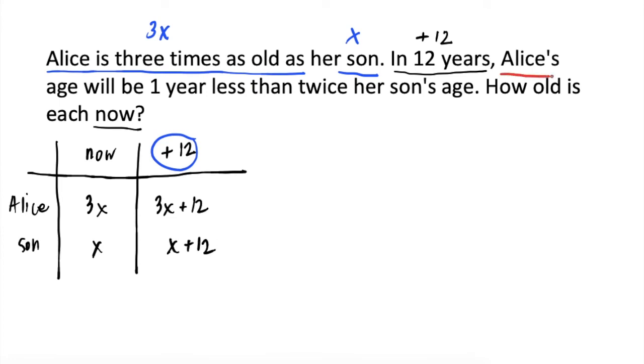Now, going back to the problem. In 12 years, Alice's age will be one year less than twice her son's age. So, dito tayo concerned. Alice's age, which is 3x plus 12, will be or equal to one year less than twice her son's age.